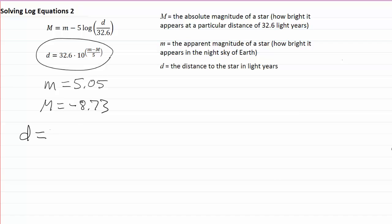D is equal to 32.6 times ten raised to the little m minus capital M. That would be 5.05 minus a negative 8.73, all of that over five. You can do this calculation by plugging it straight into your calculator, but I'm going to simplify it a bit before I do that.